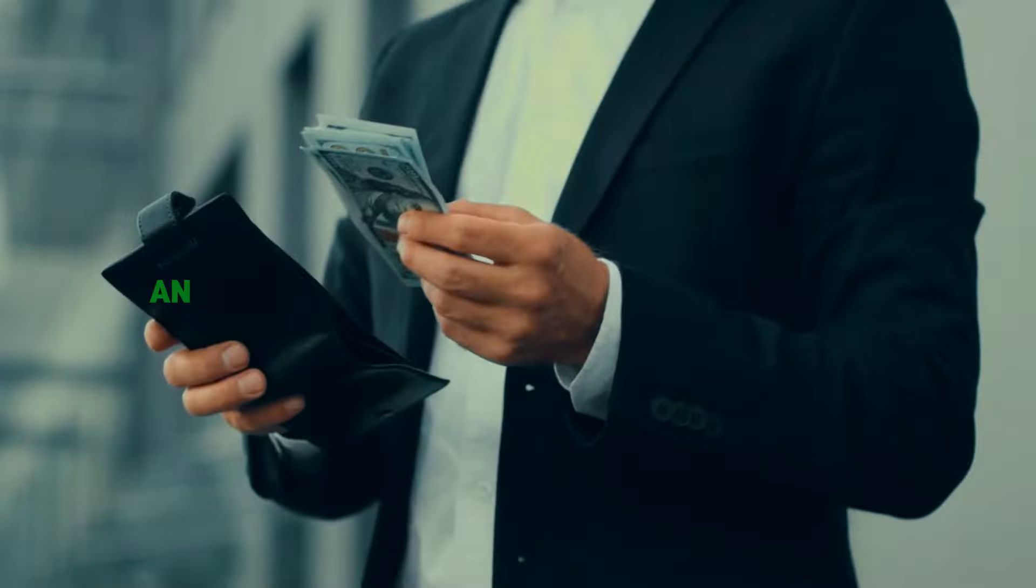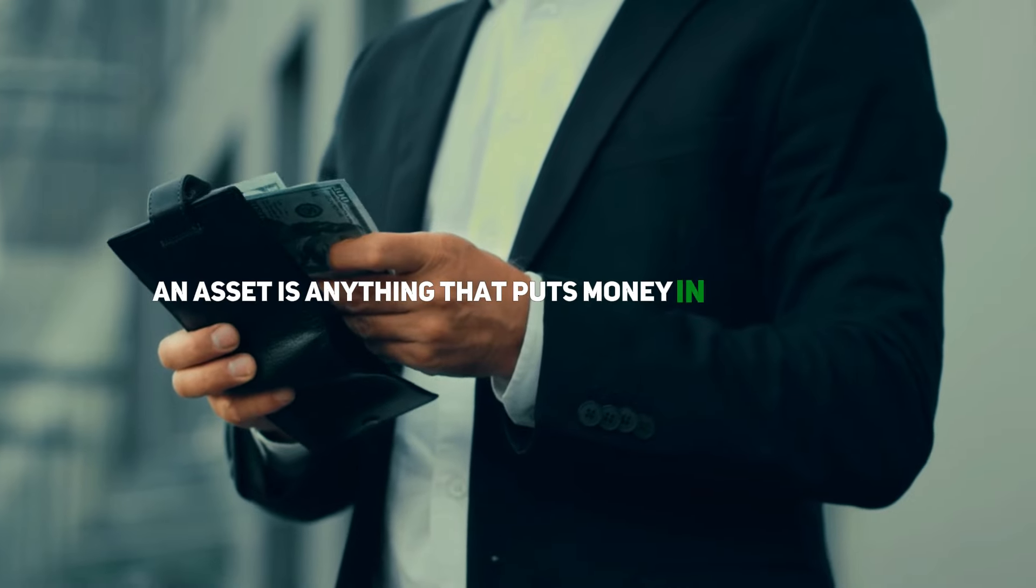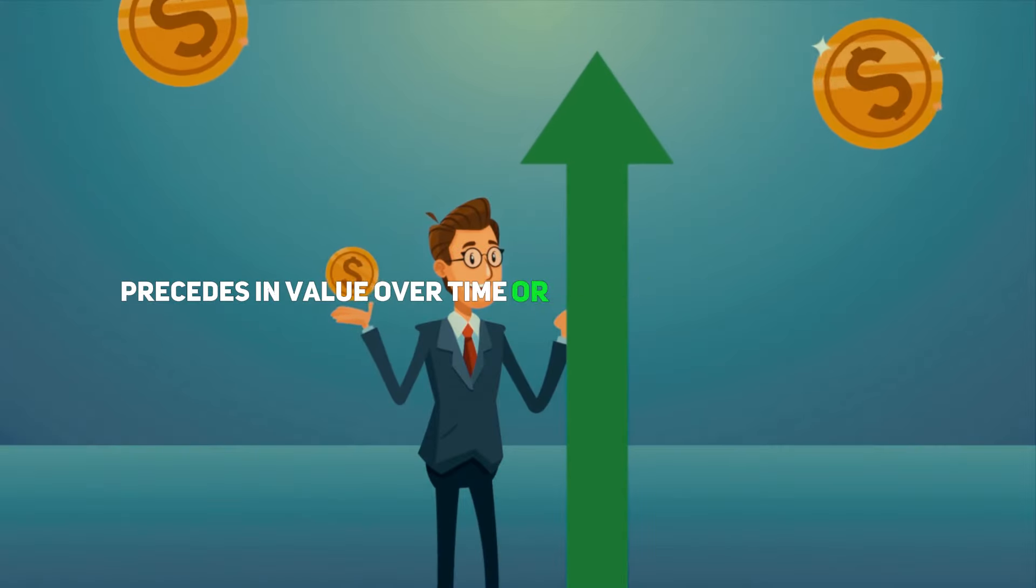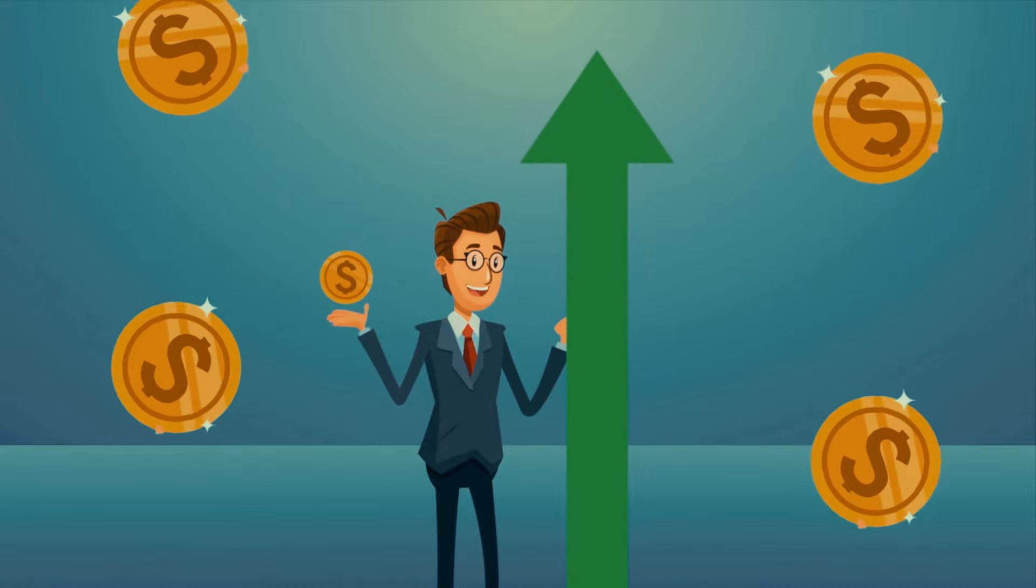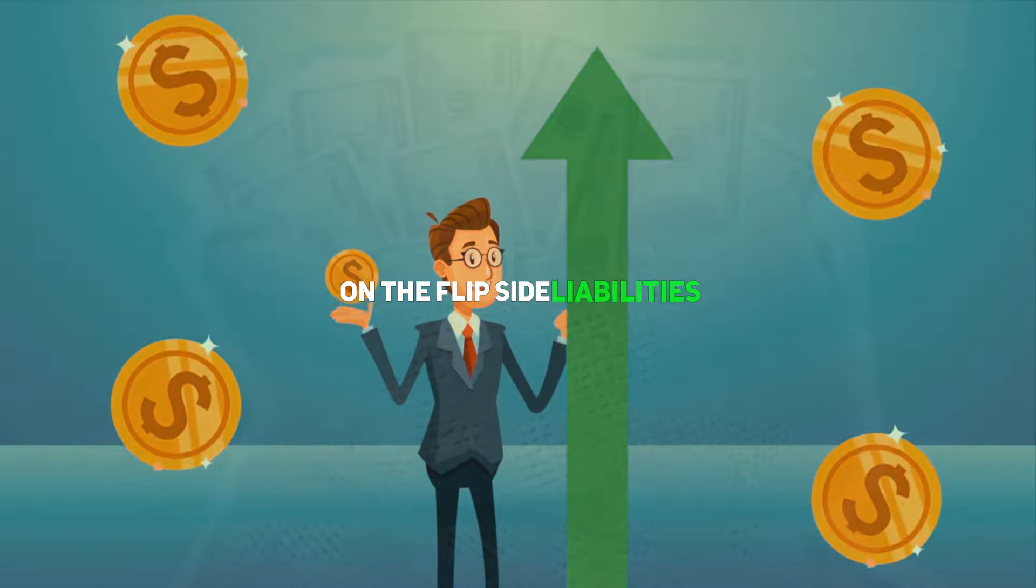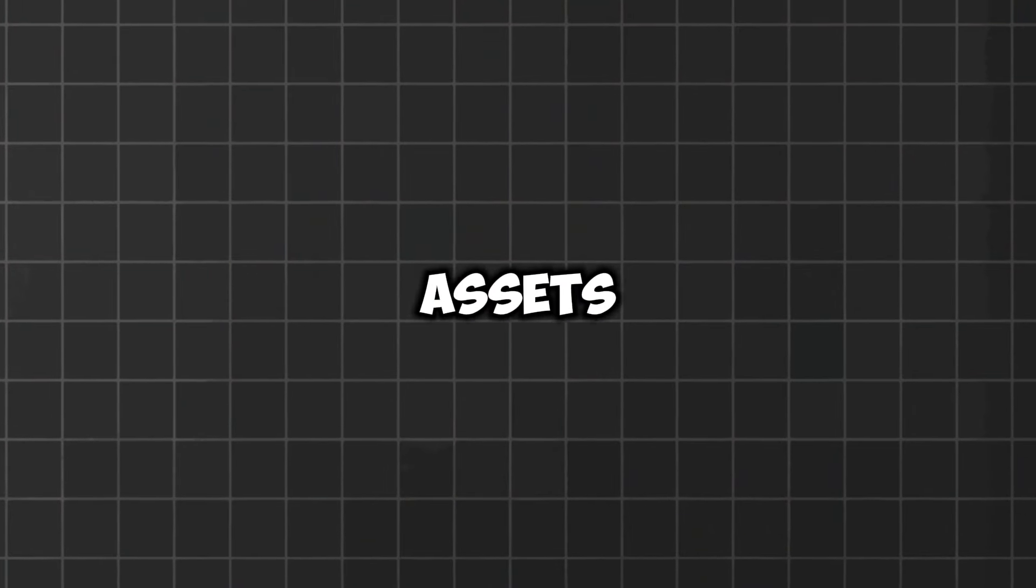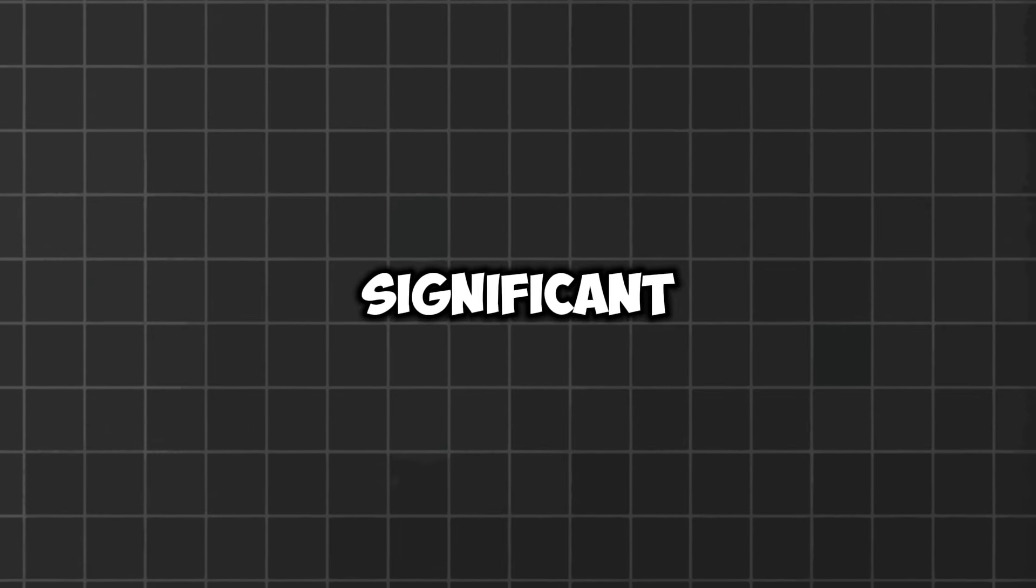Simply put, an asset is anything that puts money in your pocket. It's something that appreciates in value over time or generates income for you. On the flip side, liabilities are things that take money out of your pocket. Understanding the difference between assets and liabilities is essential for building wealth. Owning the right assets can lead to significant wealth accumulation over time, so it's crucial to know which ones to focus on.